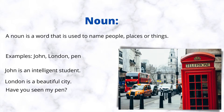Noun. A noun is a word that is used to name people, places, or things. Examples: John, London, pen. John is an intelligent student. London is a beautiful city. Have you seen my pen?